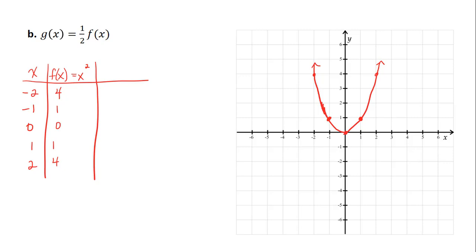Let's look at g(x) is 1 half f(x). Well again, f(x) is x squared, so 1 half f(x) is just 1 half x squared. So this tells me for every input, my y value for g is going to be half of what it was for f. So 1 half times 4 is just 2. 1 half times 1 is 1 half. 1 half of 0 is 0. 1 half of 1 is 1 half. 1 half of 4 is 2.